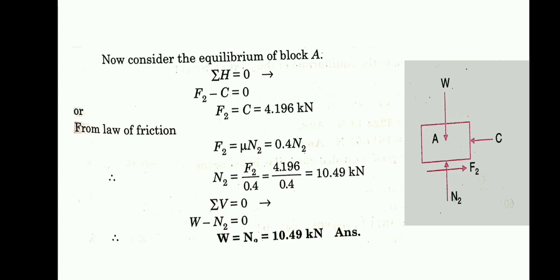Since F2 is known and the coefficient of friction between block A and the horizontal surface is 0.4, we apply the friction law: F2 equals mu times N2. So N2 equals F2 divided by mu, which gives N2 equals 4.196 divided by 0.4, and the reaction from the horizontal surface to Block A is N2 equal to 10.49 kN.